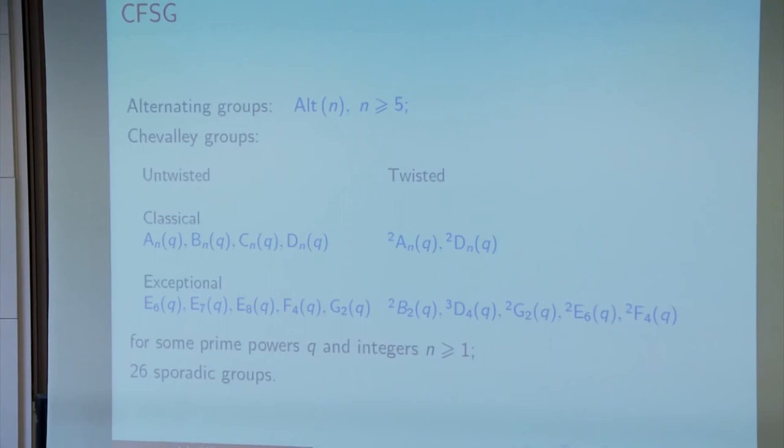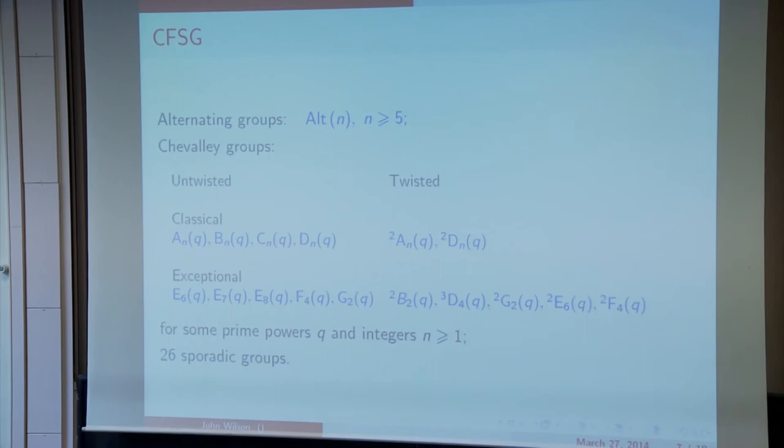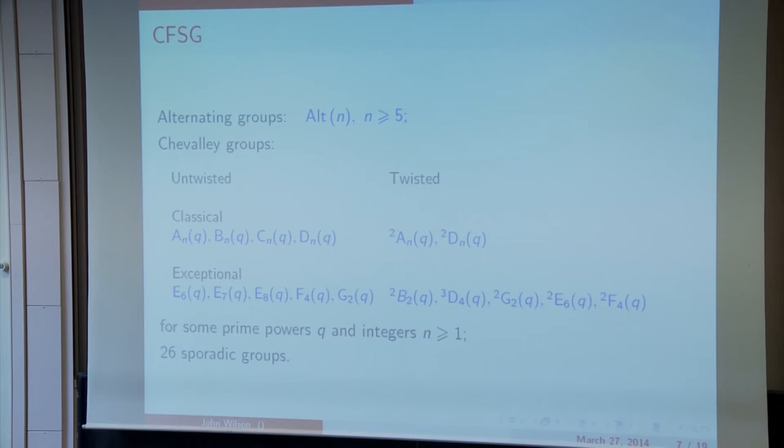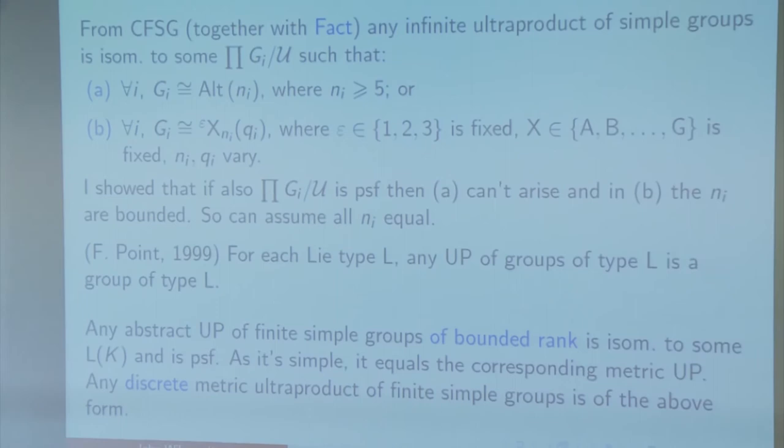Of course it's better than that because of the classification of the finite simple groups. Here's the list of the finite simple groups. Let's take the ones at the end, 26 sporadic groups. Well, they all satisfy the sentence saying the number of elements in this object is less than or equal to the order of the monster, and therefore an ultraproduct of those would. So we're not very interested in an ultraproduct of sporadic groups, it would be finite. But if we want to study abstract ultraproducts of simple groups, we can assume that they're all in one of these classes. Maybe they're all of the form E6(Q) for some family of primes Q, prime powers Q. So I've just written up here what I just said.